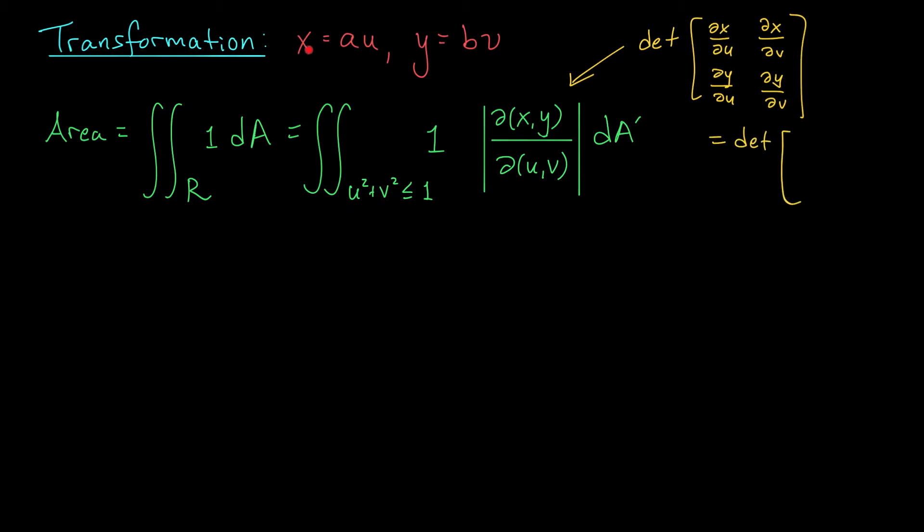And that's the determinant of, well, partial x by partial u is just a, partial y by partial u, there's no u's here, so that's going to be zero. Similarly, partial x by partial v is zero, and partial y by partial v is b. So my determinant is a times b.